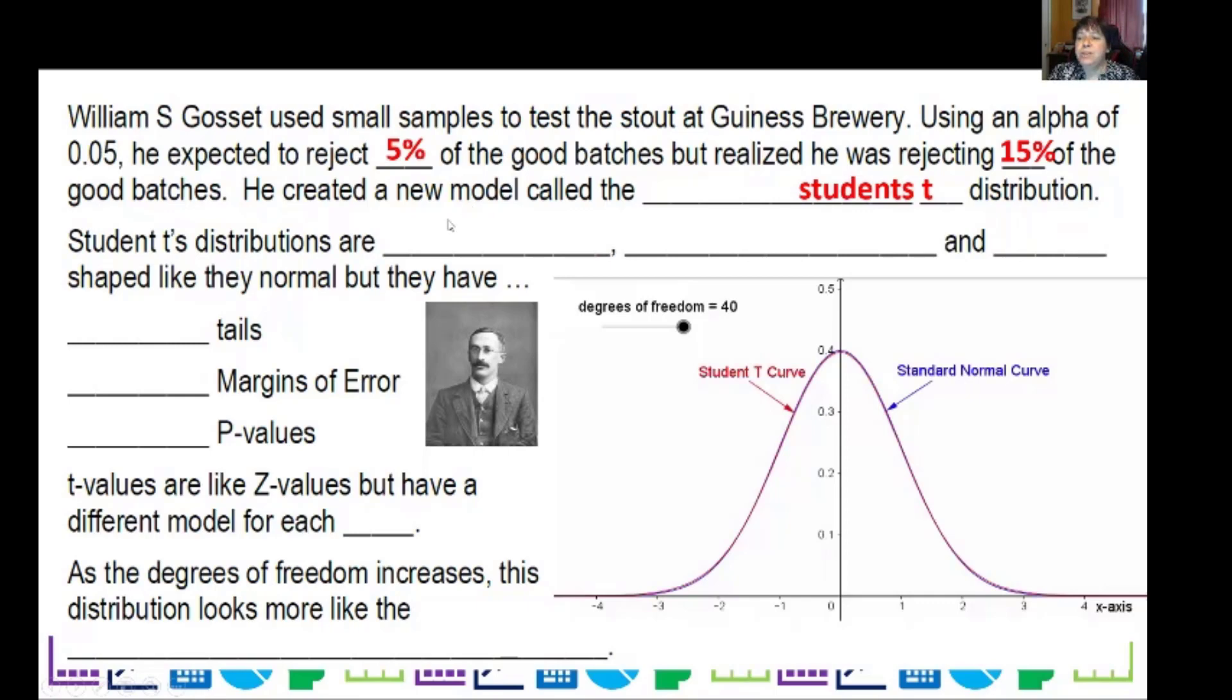Now, these student's t distributions are unimodal, symmetric, and bell-shaped. So right here, the red curve is the student's t curve when we have a lot of degrees of freedom, like 40 here. The standard normal curve, which we've been using, is the blue one.